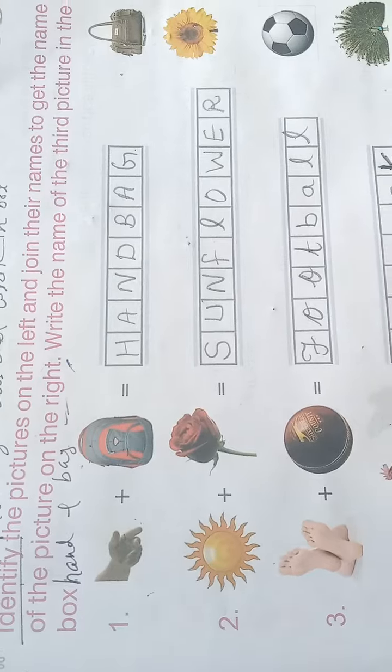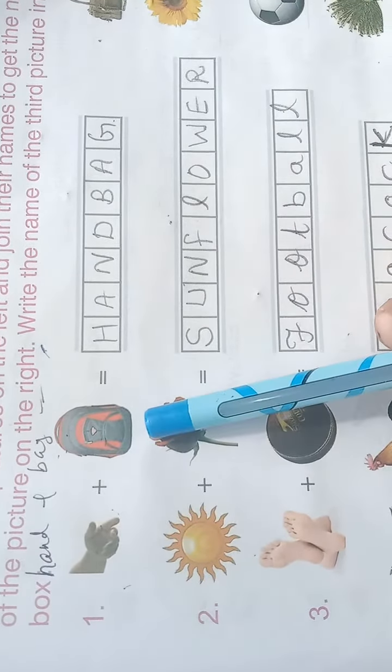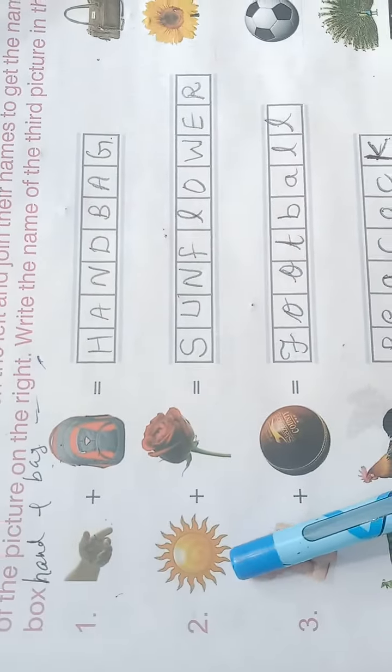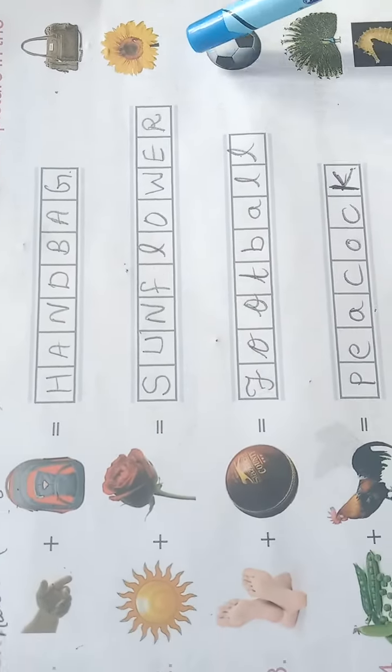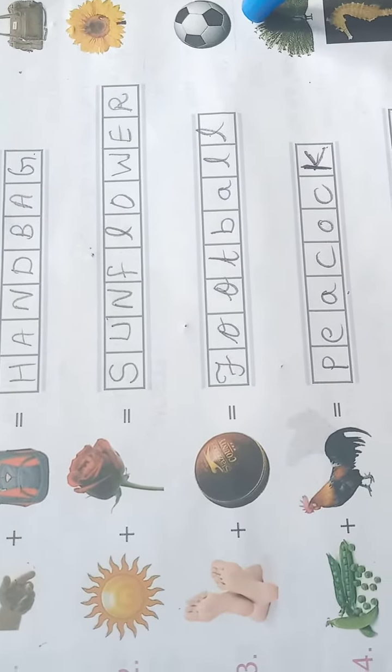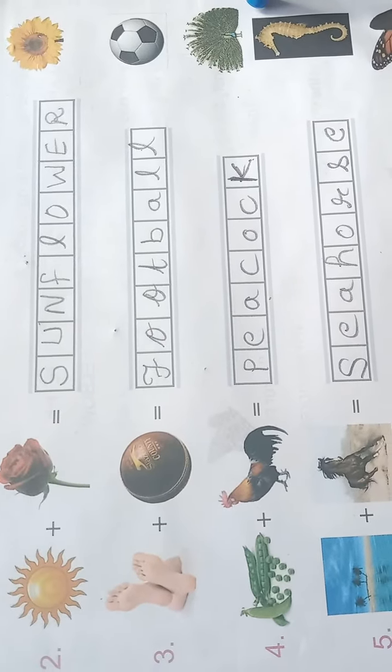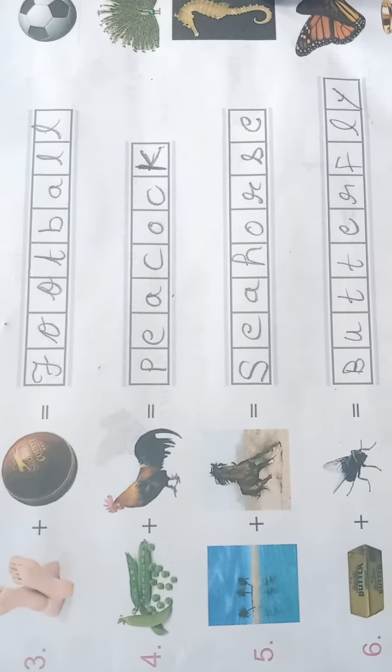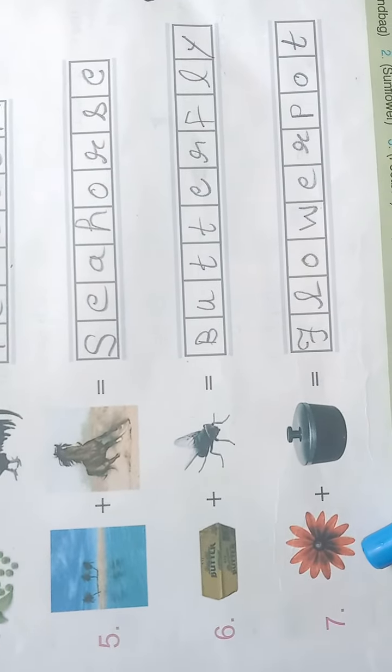Number one - hand plus bag equals handbag. Next, sun plus flower equals sunflower. Foot plus ball equals football. P plus cock equals peacock. Sea plus horse equals seahorse. Butter plus fly equals butterfly. Flower plus pot equals flowerpot.